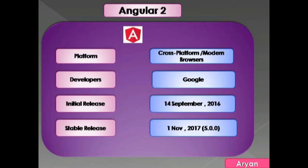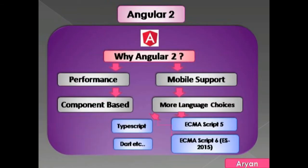Now let's have a look at the history of Angular. It is a cross-platform, modern browser framework developed by Google. Its initial release was on September 14th, 2016, and the first stable release was November 1st, 2017 — that is version 5.0.0.